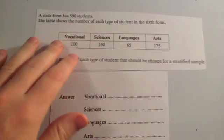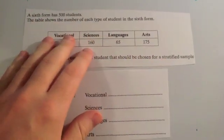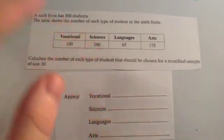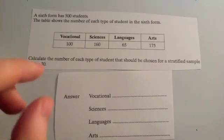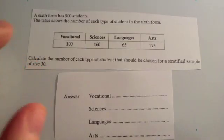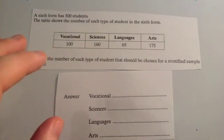We're now going to look at stratified sampling. Stratified sampling is doing a sample in the same proportions as each subgroup of the population.